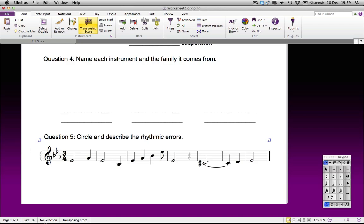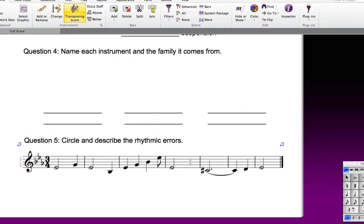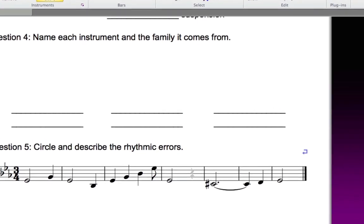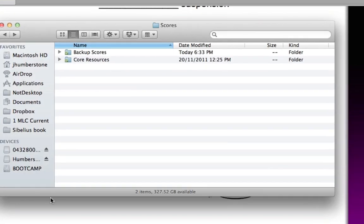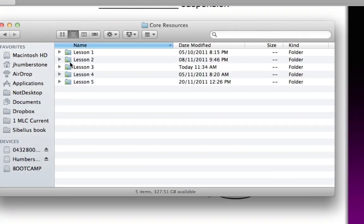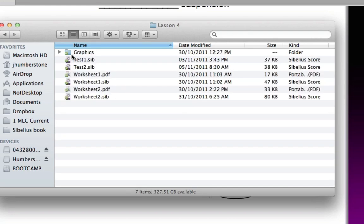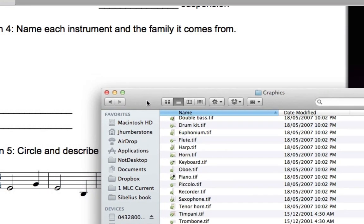Sibelius can import files in six different formats, and these are listed in your book. In the Lesson 4 folder, in your Core Resources folder, is another folder of graphics which you can experiment with, including the ones needed for this question.